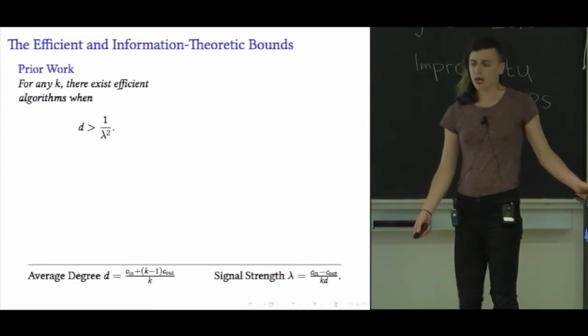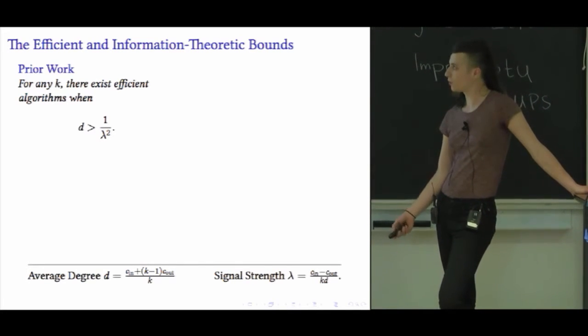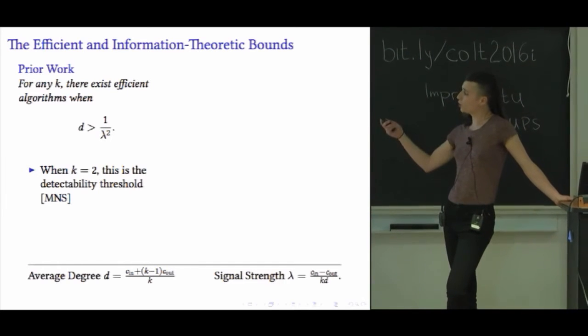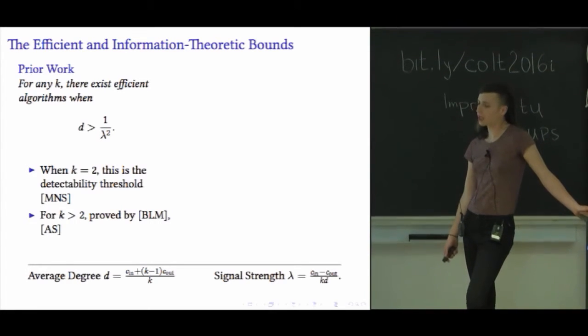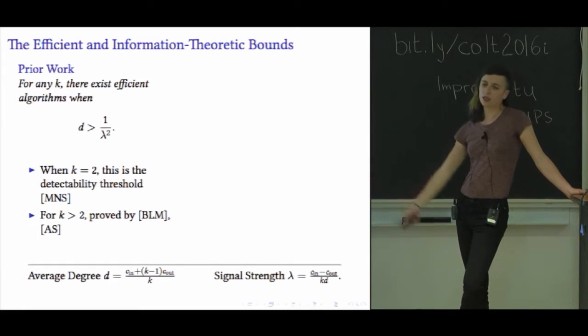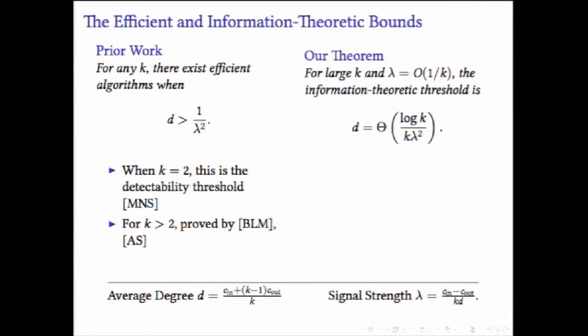There are some things already known about both tasks, in particular that there are polynomial time algorithms to do them when d is larger than 1 over the square of the signal strength. There are spectral algorithms, belief propagation algorithms, and we know rigorously that these work in this regime, based on work by Macell, Neiman, and Sly in the case where there are only two groups, and by Bordenave, LeLarge, and Massoulier, and also by Abbe and Sandin for more than two groups. In fact, when there are only two groups, this is the information theoretic threshold. There are polynomial time algorithms whenever detection or recovery are information theoretically possible.